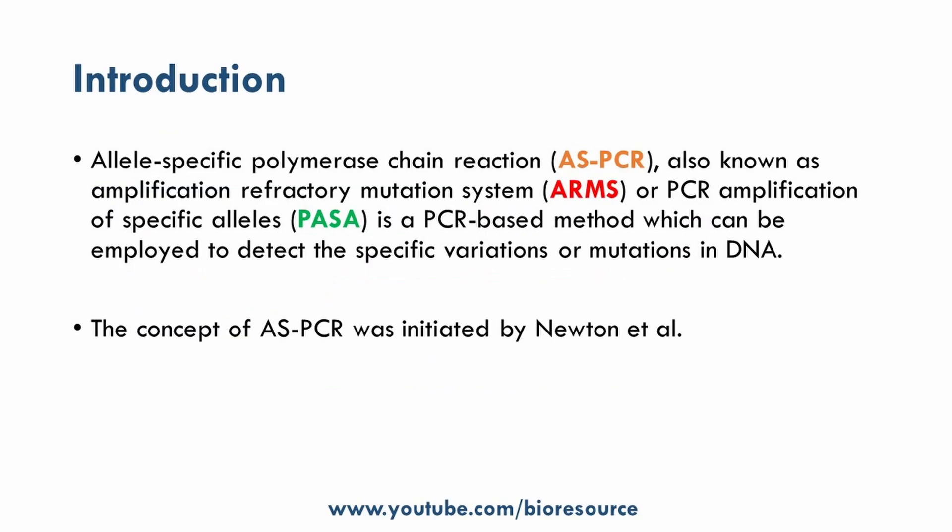So, what is allele specific PCR? Allele specific PCR, or allele specific polymerase chain reaction (AS-PCR), is also known as the amplification refractory mutation system (ARMS) or PCR amplification of specific alleles. It is a PCR-based method which can be employed to detect specific variations or mutations in the DNA. Since the PCR amplification is targeting the single nucleotide polymorphism or the mutation in the alleles, this technique is called allele specific PCR.